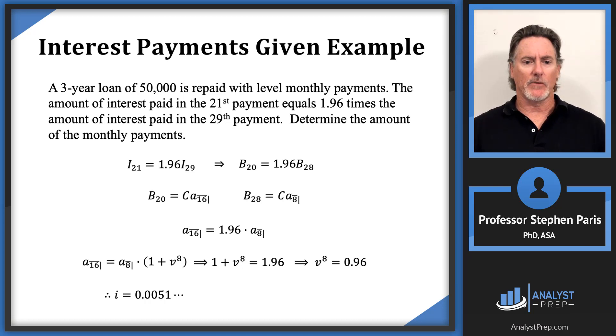And then I've got all the information to calculate what the amount of the monthly payments are. I've got a loan of $50,000, so the $50,000 has to be the present value of those 36 payments of C. So I get this equation: 50,000 equals C times a angle 36 at that interest rate i. Just use the TVM buttons and we'll get what the amount of the payments are. The monthly payments are $1,524.25.